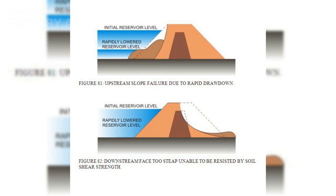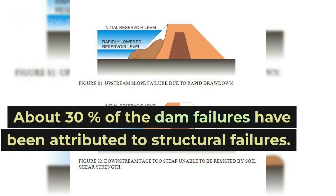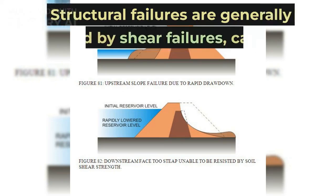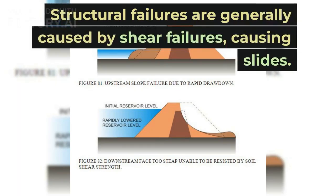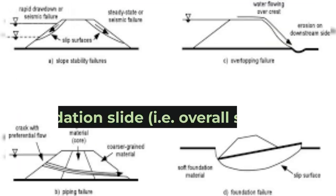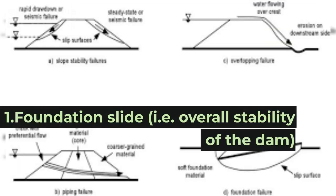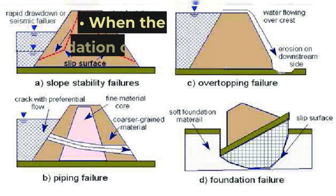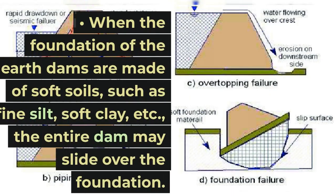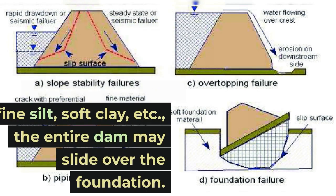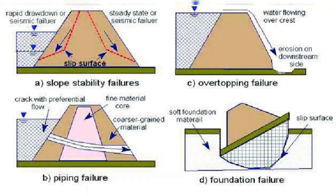Structural failures. About 30% of dam failures have been attributed to structural failures. Structural failures are generally caused by shear failures causing slides. 1. Foundation slide — overall stability of the dam. When the foundations of earth dams are made of soft soils such as fine silt, soft clay, etc., the entire dam may slide over the foundation.